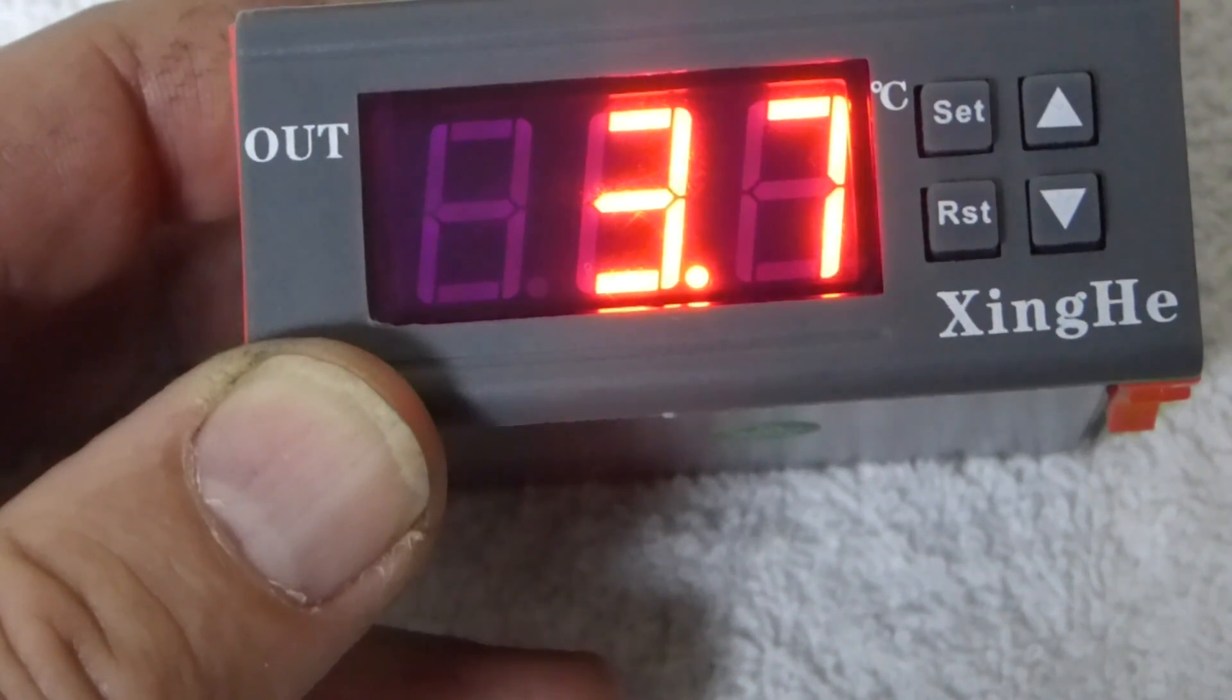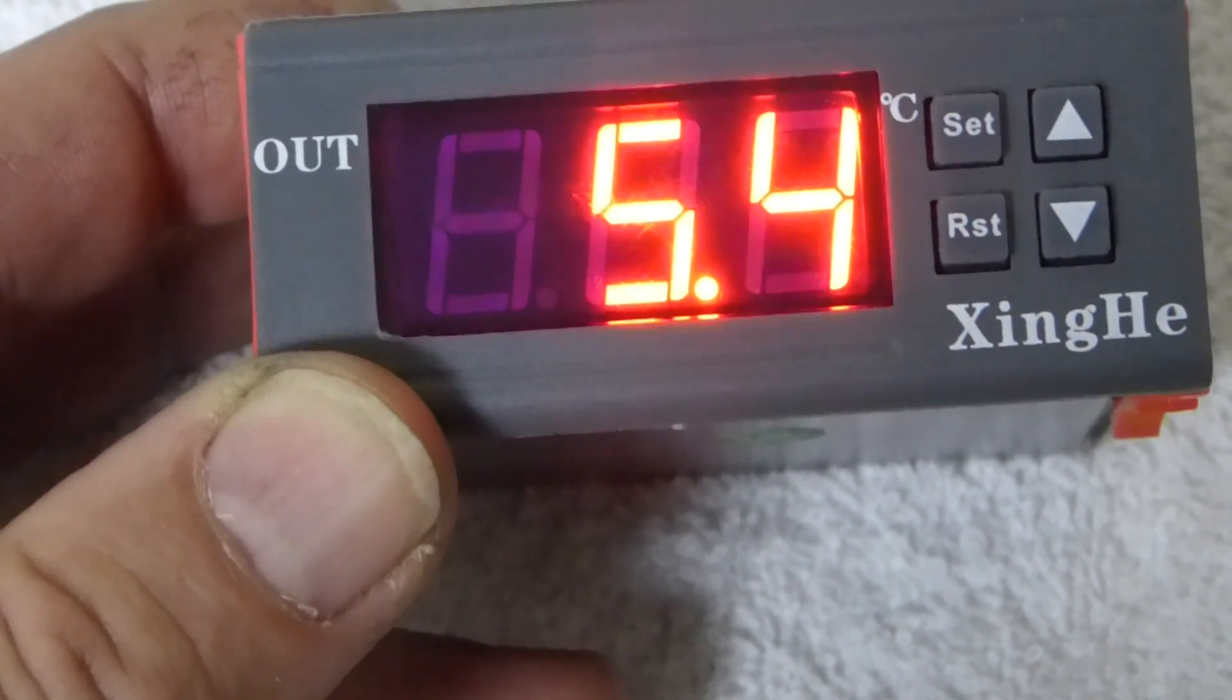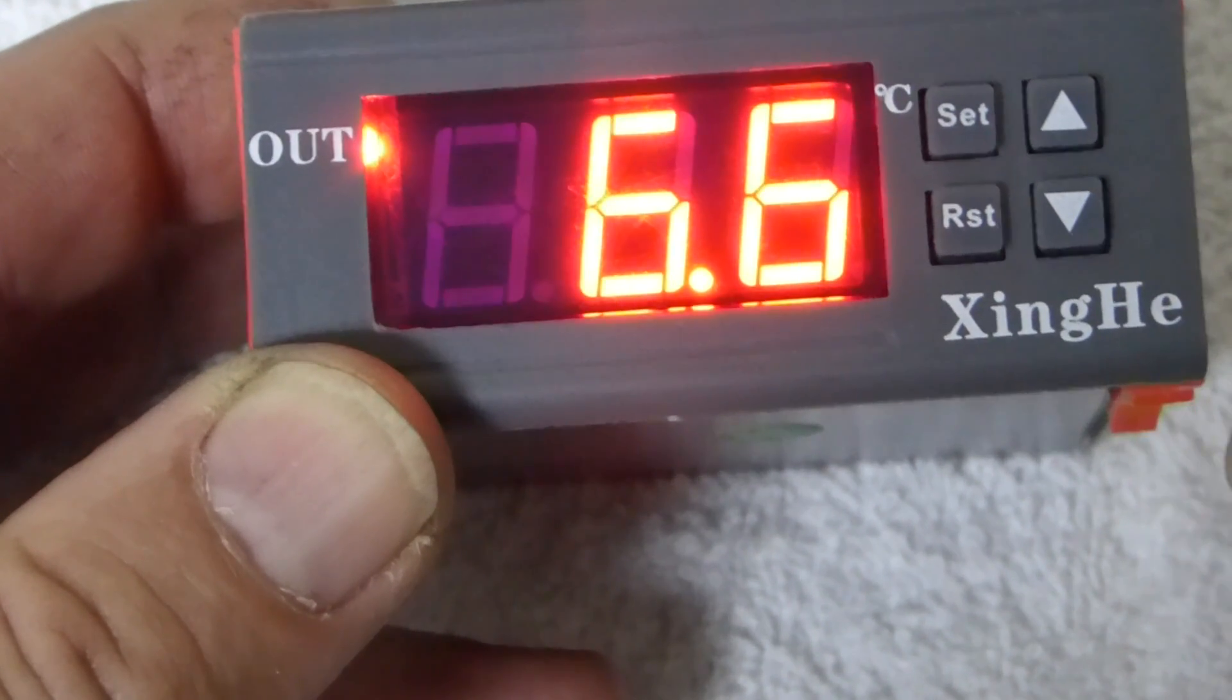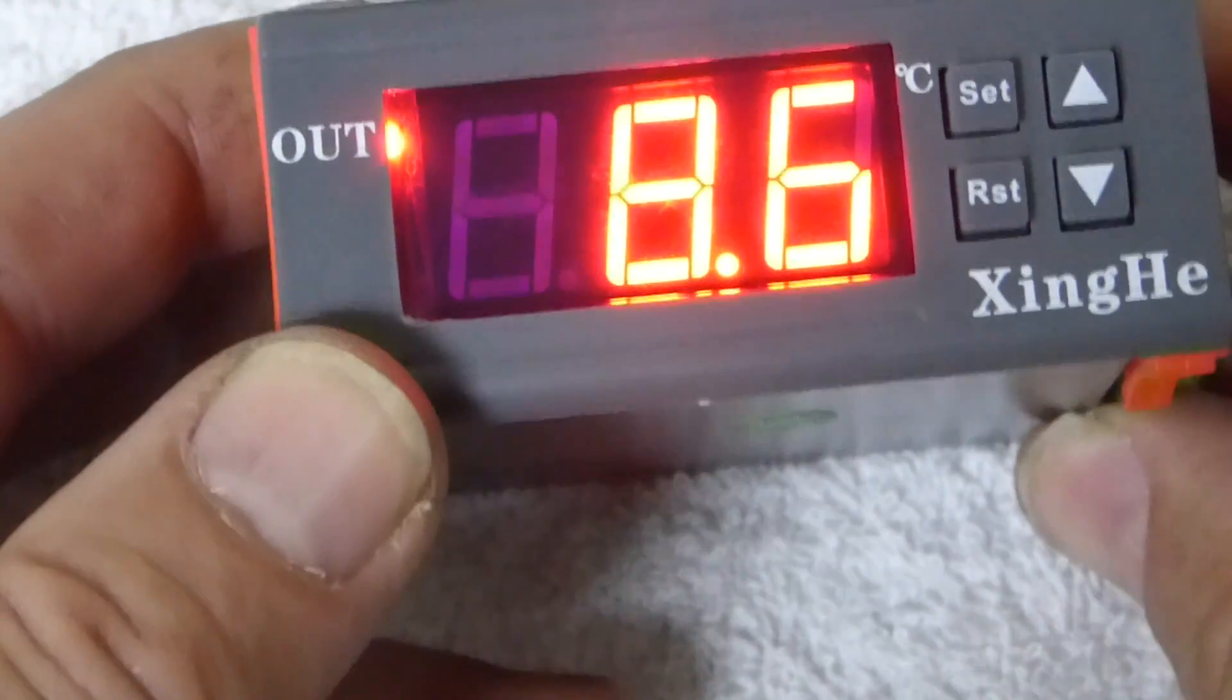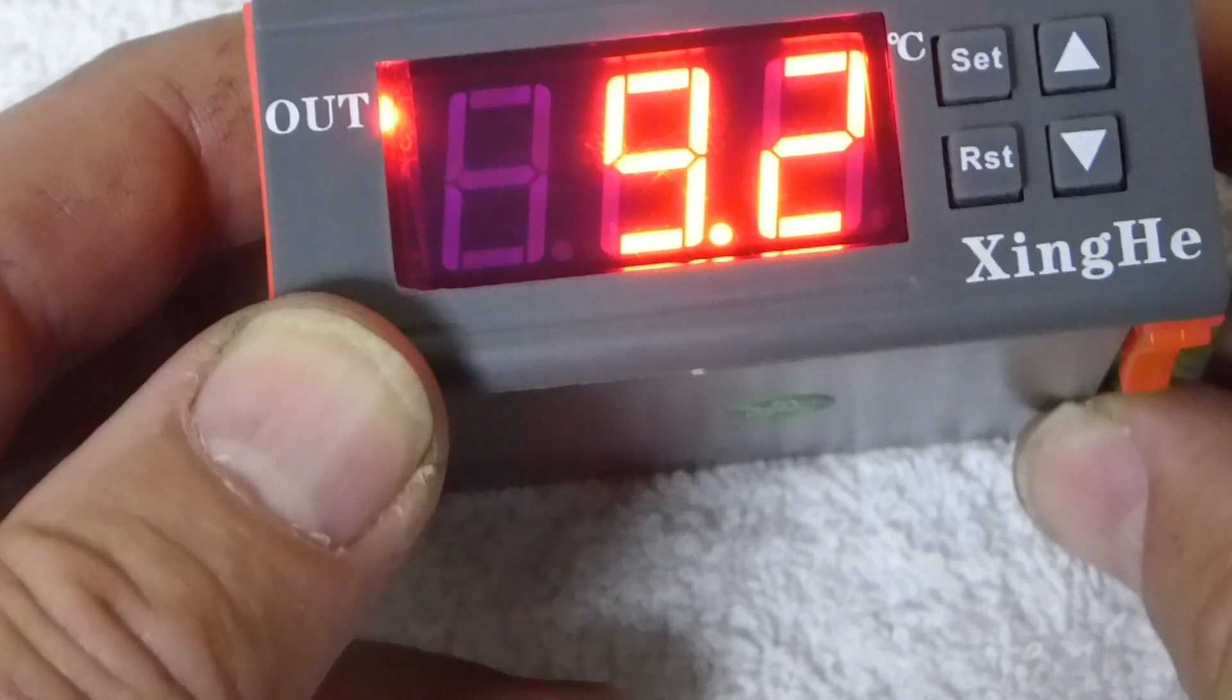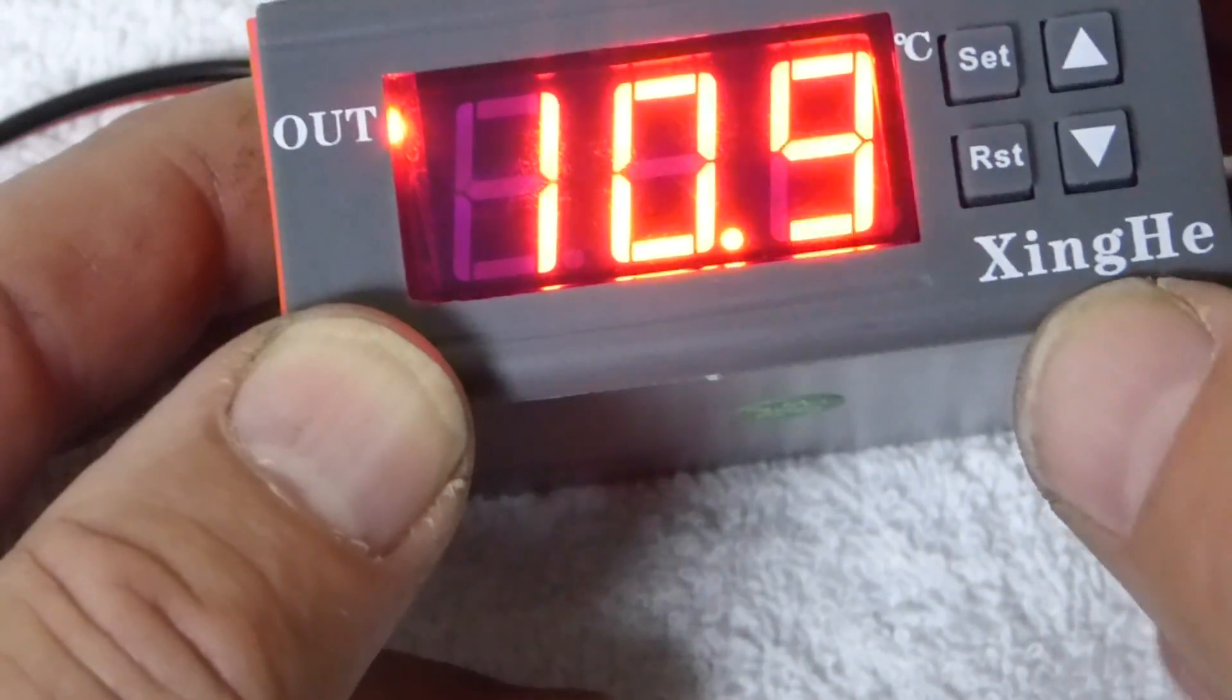And there you go. Now if I take the probe out, if you watch it, at 6 degrees it will come on, which means now the compressor is just turned back on. And that's about all we need to know.